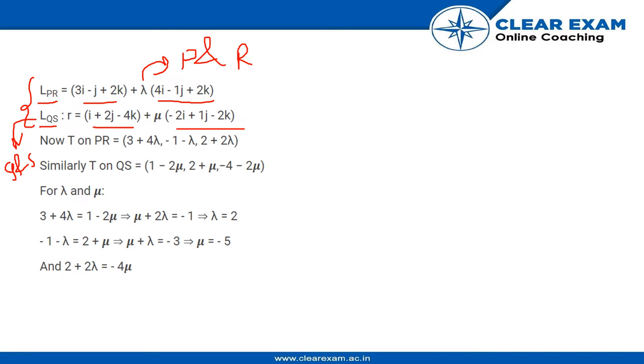So what we have is, now T on PR, we know T is on line PR. So we can write a general point on this line to be T, which is 3 plus 4 lambda. We just equate the I coordinate, the J coordinate and the K coordinate. So we have 3 plus 4 lambda, minus 1 minus lambda, 2 plus 2 lambda.